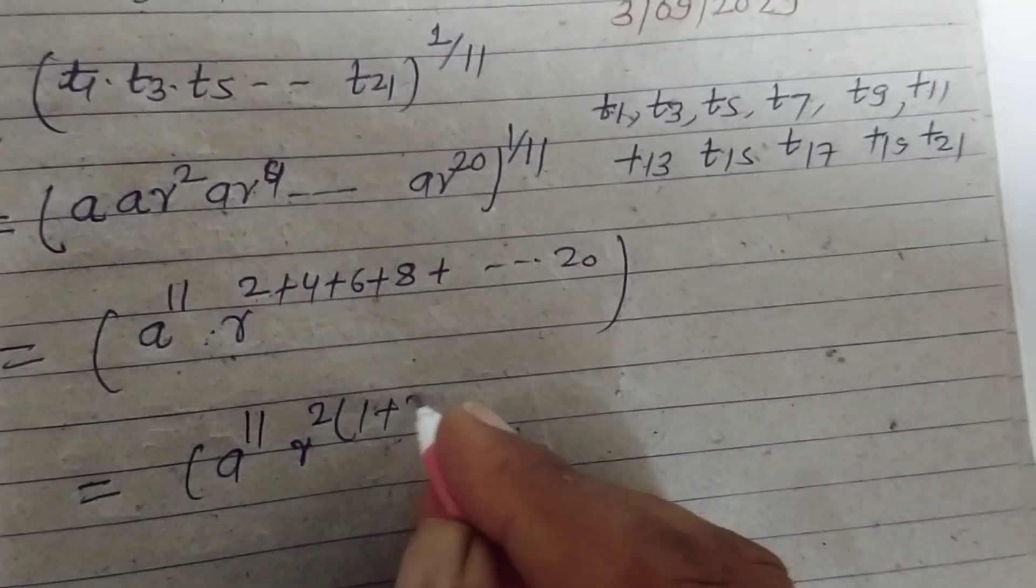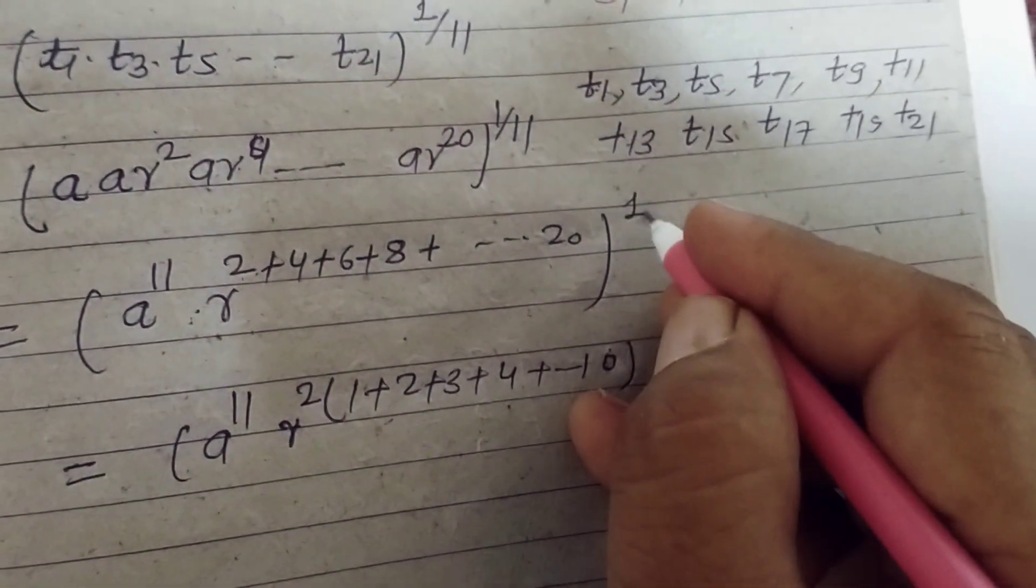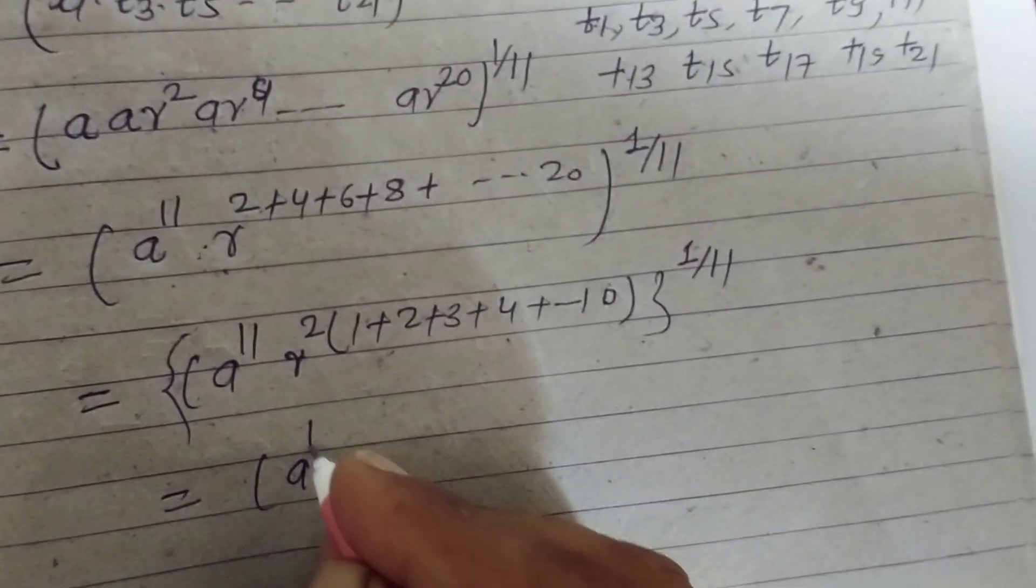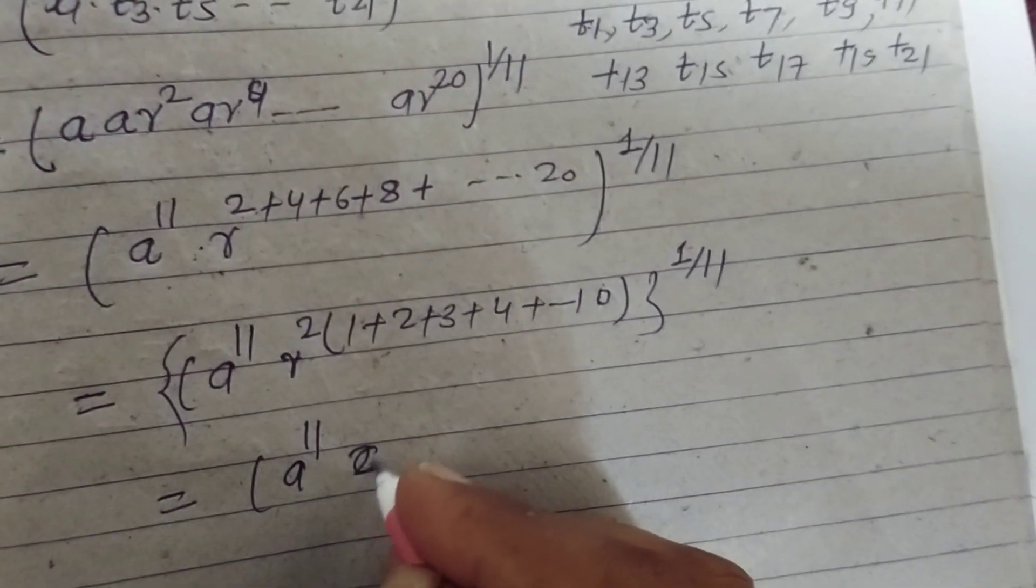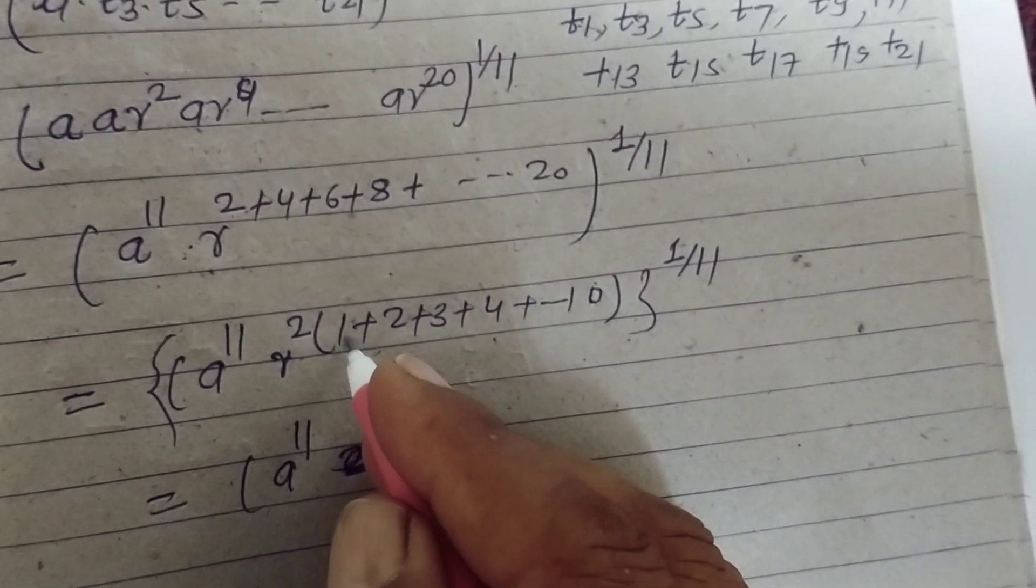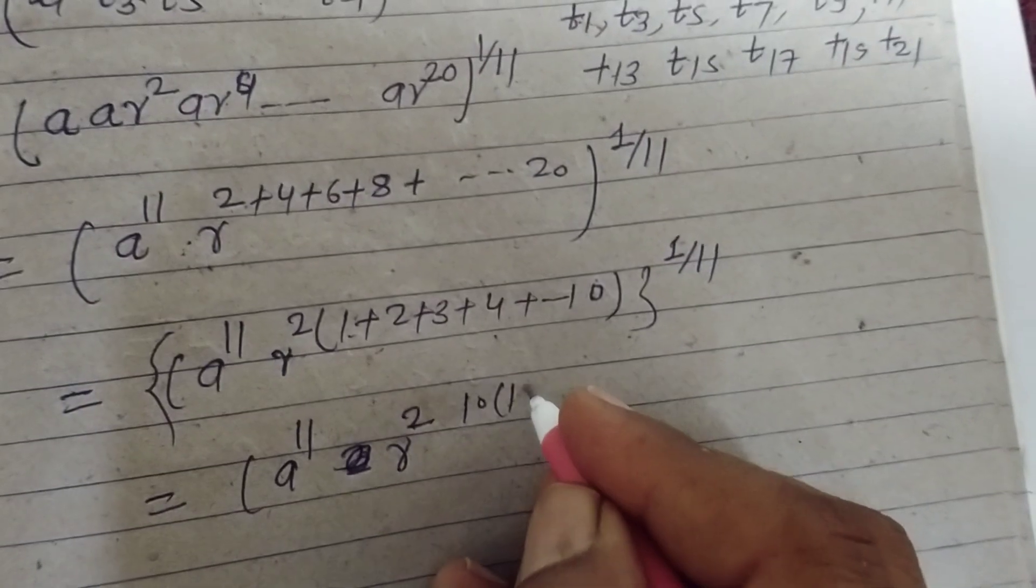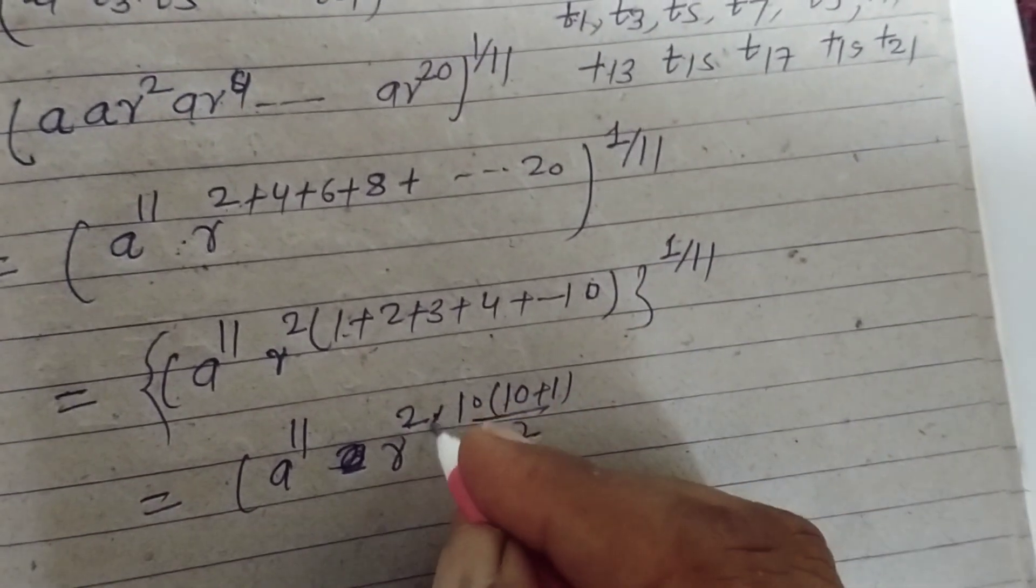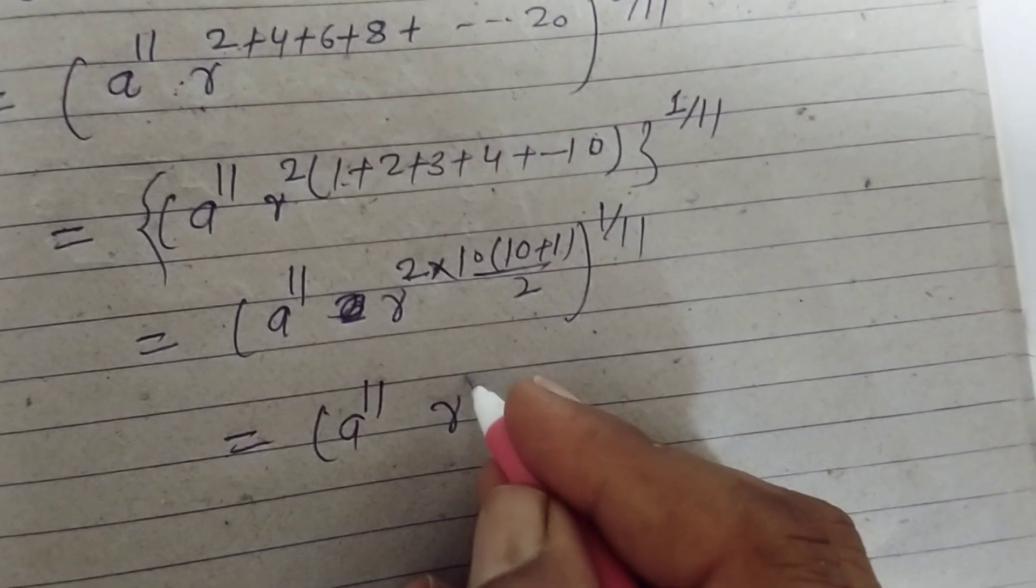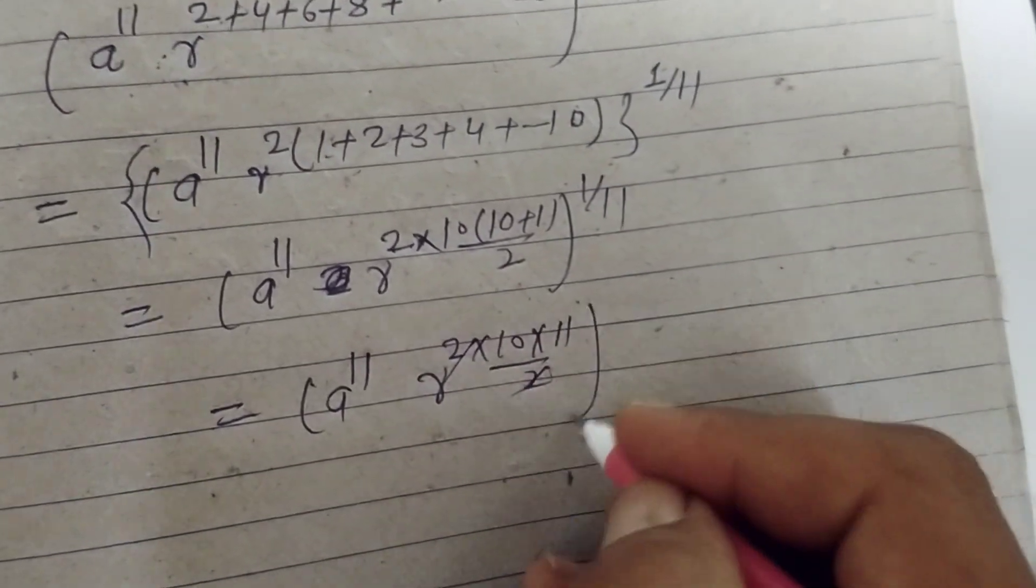So a to the power 11, and these become r² into sum of natural numbers. So 2 cancels, this is 1 upon 11.